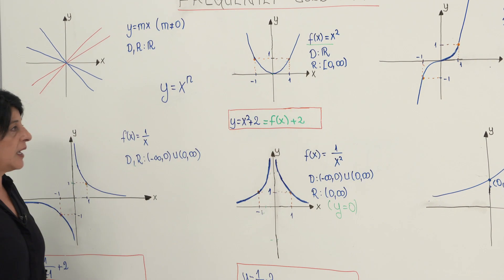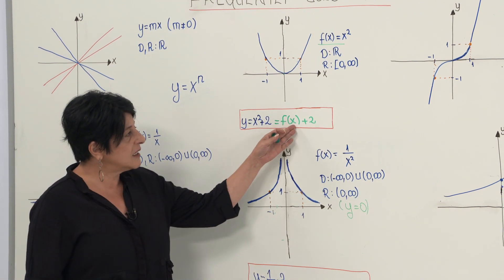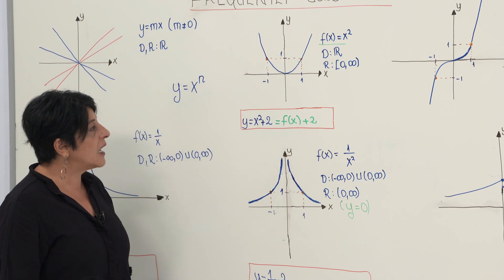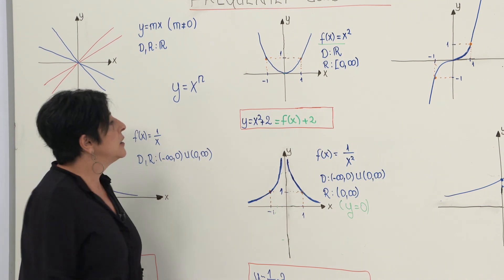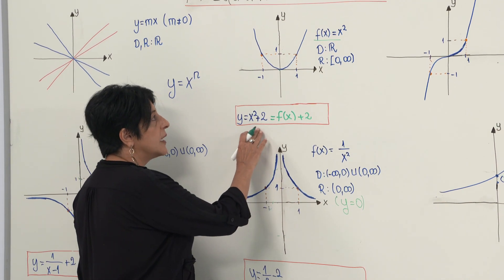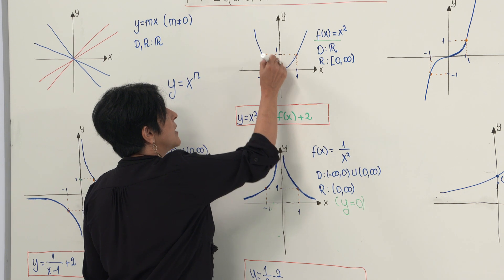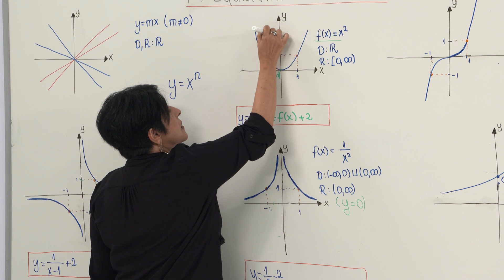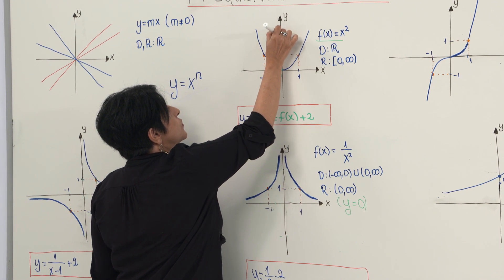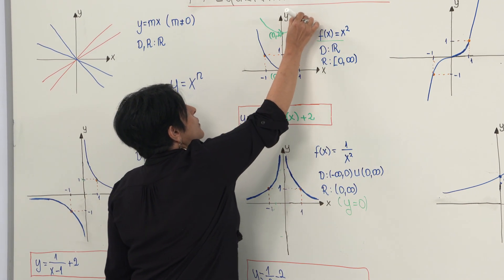Now, we already know that if I can write it in this form, it means that I can shift the graph of f two units up to obtain the graph of y equals x squared plus 2. So, actually, the vertex which is at (0, 0) becomes at (0, 2). And this will be your new graph.